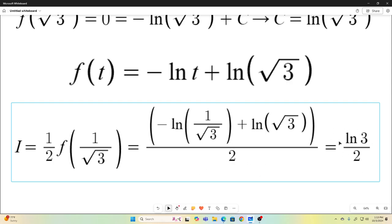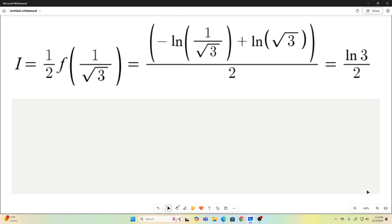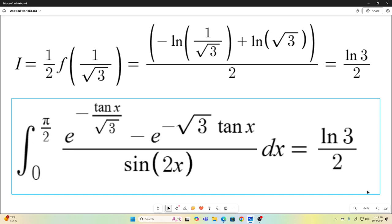That simplifies by getting rid of the negative sign by taking the reciprocal. We have 2 natural log square root of 3 over 2, which simplifies to natural log 3 over 2. So putting it all together, the integral from 0 to pi over 2 of e to the negative tangent x over square root of 3 minus e to the negative square root of 3 tangent x over sine of 2x dx equals natural log 3 over 2. I hope you enjoyed that, and we'll see you next time.